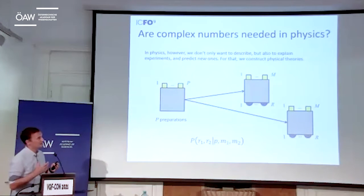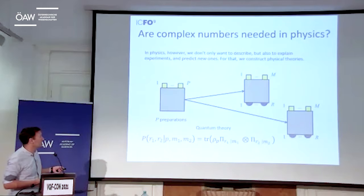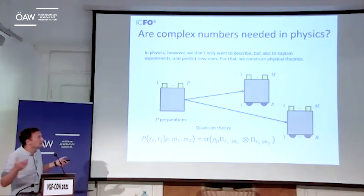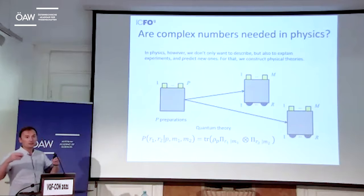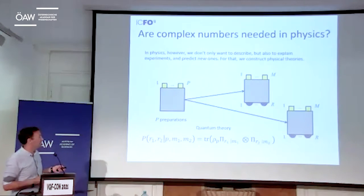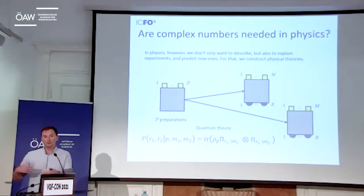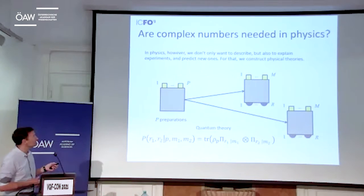If you have this experiment and want to model it using quantum theory — the standard quantum theory we are more used to in quantum information — you will say this is something preparing states. You assign density matrices to these preparations, rho_P, then assign a measurement. You believe these are two independent measurements, so you put a tensor product. You assign mathematical objects to the elements in your experiment and describe it. Probabilities are computed through the Born rule; you combine the state with a measurement, apply a tensor product because they are separated, and so on.